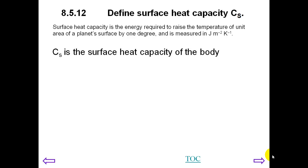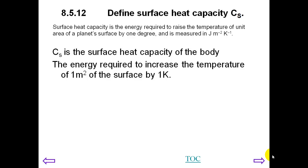We use the symbol C with a subscript S to mean the surface heat capacity of the body. This is the energy required to increase the temperature of one meter squared by one Kelvin.